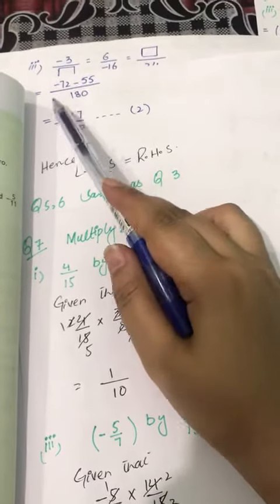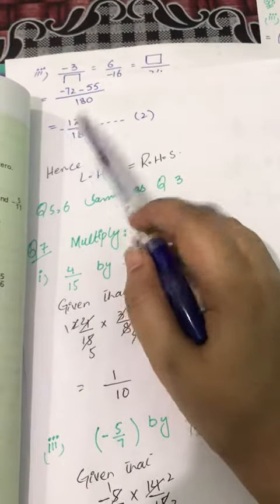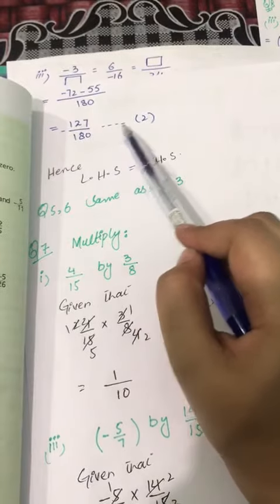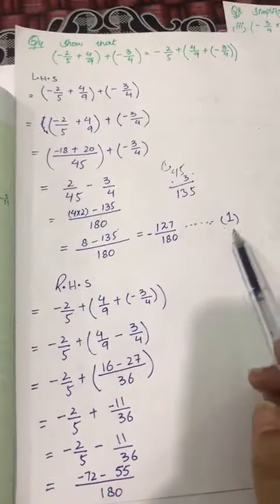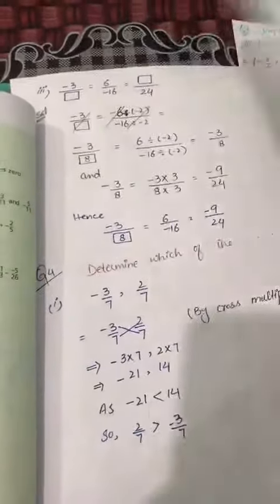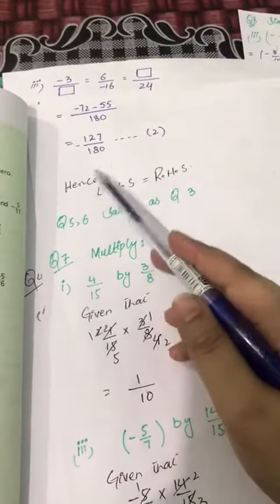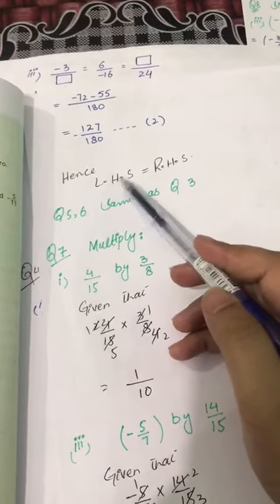Minus 55 minus minus plus, but value sign is minus 127 over 180. Equation 2. If we see equation 1 and equation 2, they are the same, so this is proof left hand side equals right hand side.